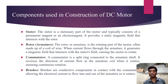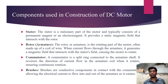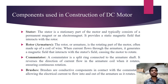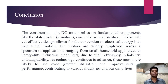The commutator is a split ring connected to the armature shaft. It reverses the direction of current flow in the armature coil as it rotates, ensuring continuous rotation. The brushes are a very important part — they contact the commutator, allowing electrical current to flow into the armature as it rotates. The brushes are continuously in contact with the armature and pass the current to it.